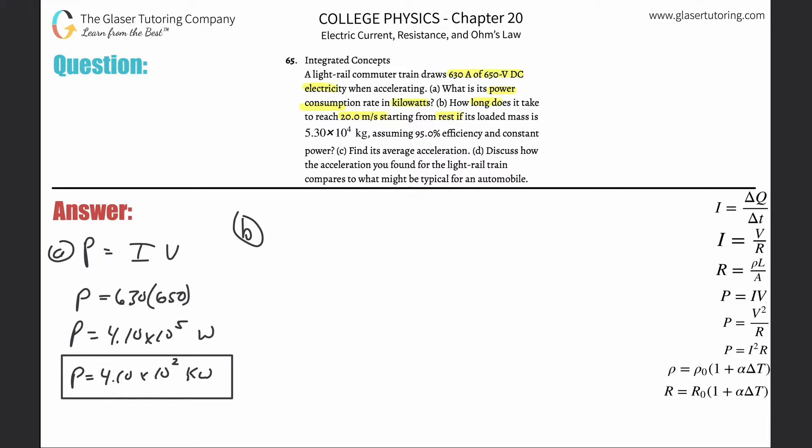How long does it take to reach 20 meters per second starting from rest if its loaded mass is 5.3 times 10 to the 4 kilograms, assuming 95 percent efficiency? We're going to start with the formula again: P is equal to IV. Not all of it is being used to generate power, only 95 percent of it.